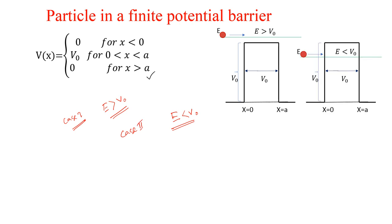For Case 2, in classical mechanics there is no probability to transmit the particle — that means the probability of finding the particle at x greater than 0 is zero. But quantum mechanically, this is not zero. So let's check how we can show that.